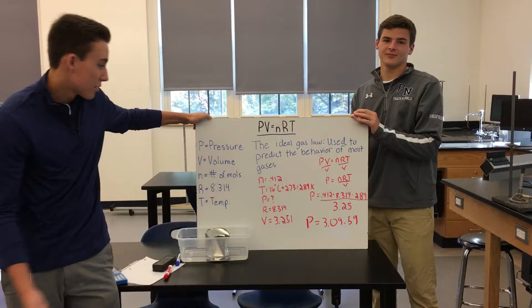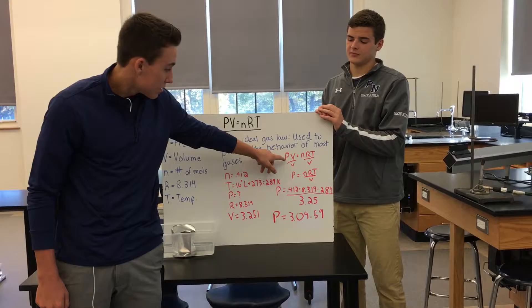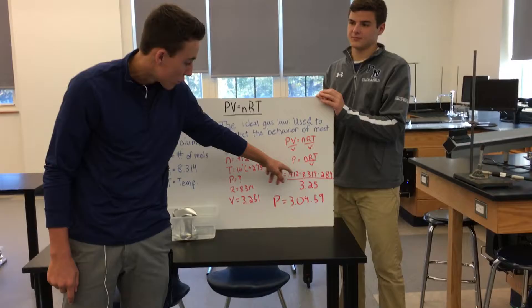Here it asks you to find the pressure of a container with N equals 0.412, T equals 289 Kelvin, P is what you're looking for, R equals 8.314, which is constant, and V equals 3.251.